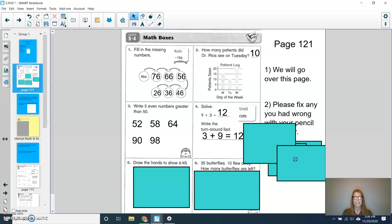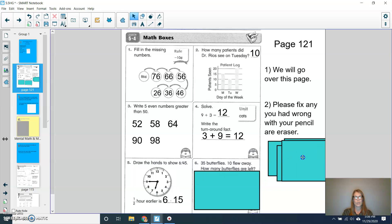For question four, you're solving. So we know that nine plus three equals 12. And then the turnaround fact, we have three plus nine is also equal to 12. For question five, draw the hands to show 6:45. So you can see my hour hand is in between the six and the seven, but it should be closer to the seven. And then my minute hand, my longer hand, is on the nine. And then a half hour earlier would be 6:15.